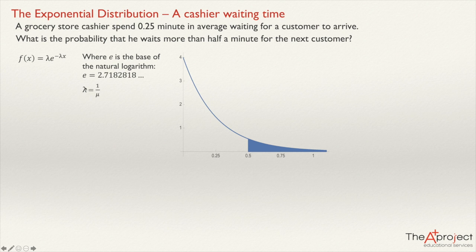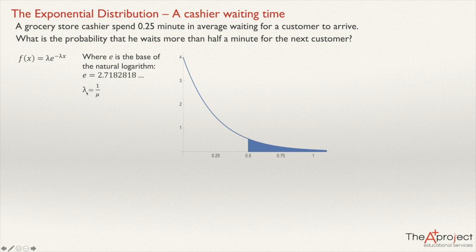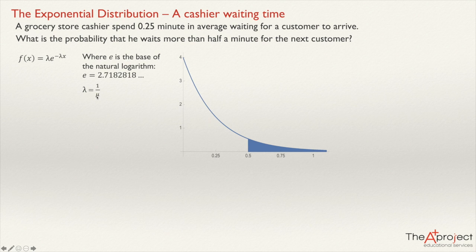Lambda represents the number of events (customers) per unit of time — per minute in this case. Here, lambda = 1 / 0.25 = 4. If the average waiting time is 0.25 minutes, that means on average there are 4 customers per minute. So this lambda is the same Poisson parameter, and it will be the parameter for the exponential distribution as well.